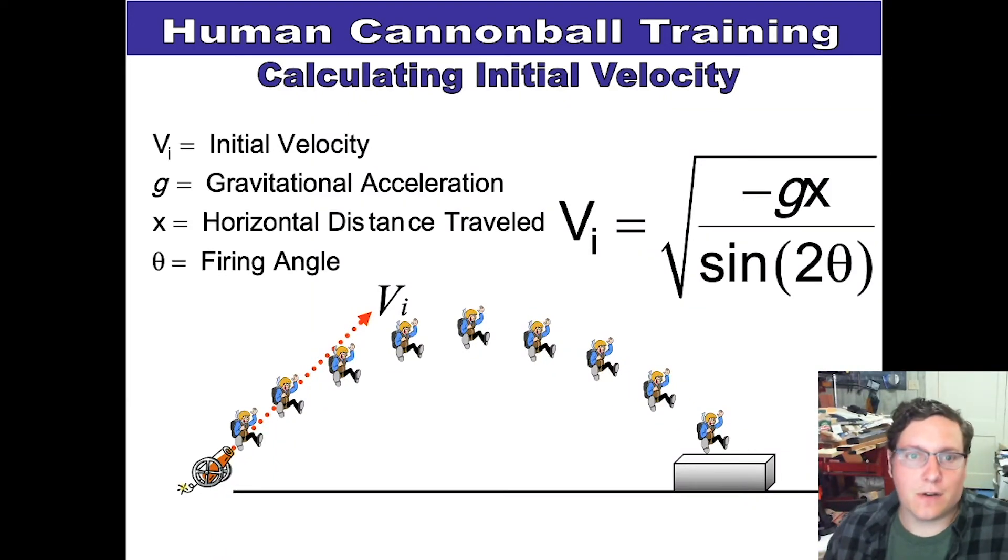How do we actually calculate all of this? Well, here's one of several forms of this formula. Vi is that initial velocity. The gravitational acceleration is going to be basically that negative 9.82 meters per second squared, or that negative 32 feet per second squared.